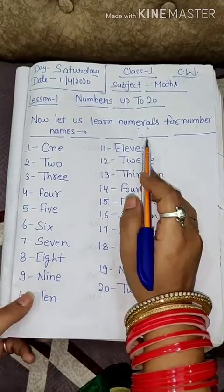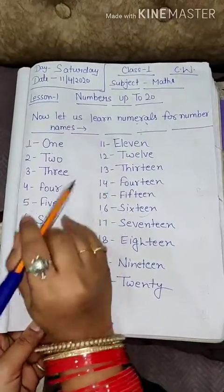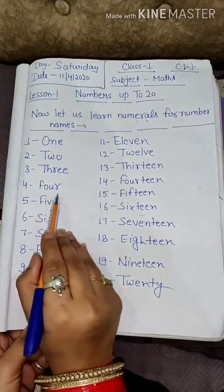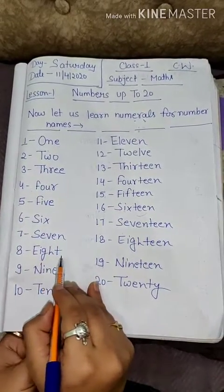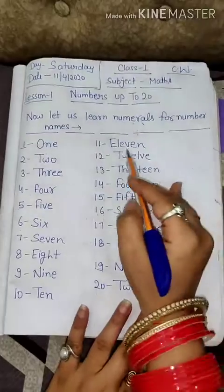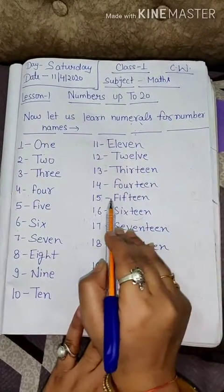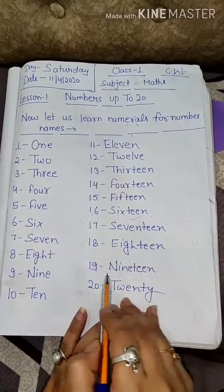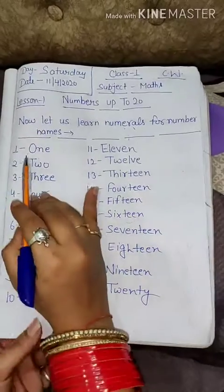Now let us learn numeral for number name. 1, 2, 3, 4, 5, 6, 7, 8, 9, 10, 11, 12, 13, 14, 15, 16, 17, 18, 19, and 20.